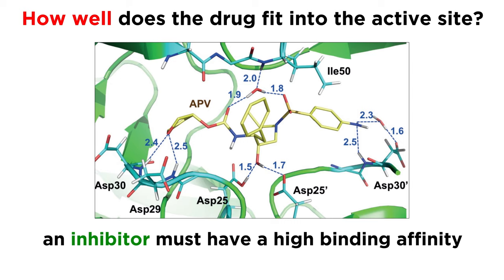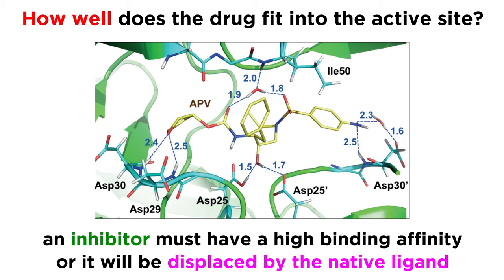If the drug is acting as an inhibitor, then a high binding affinity will be crucial in order to have reasonable efficacy, because if the binding affinity is low, then when the native ligand comes along — which is the molecule that is supposed to go in the active site — it will most likely have a higher binding affinity than the drug and will displace it, thus no inhibition can be achieved.